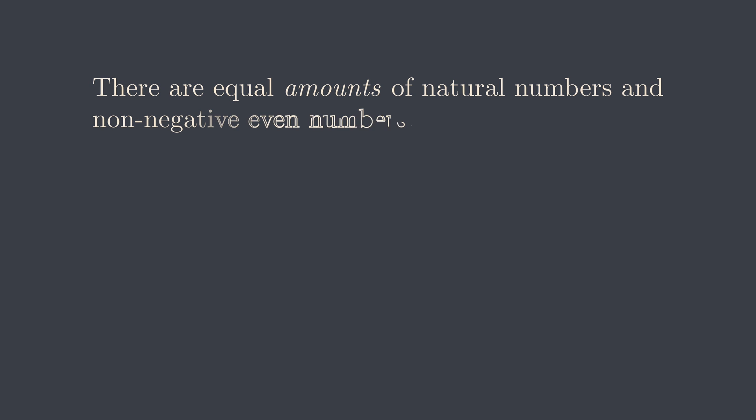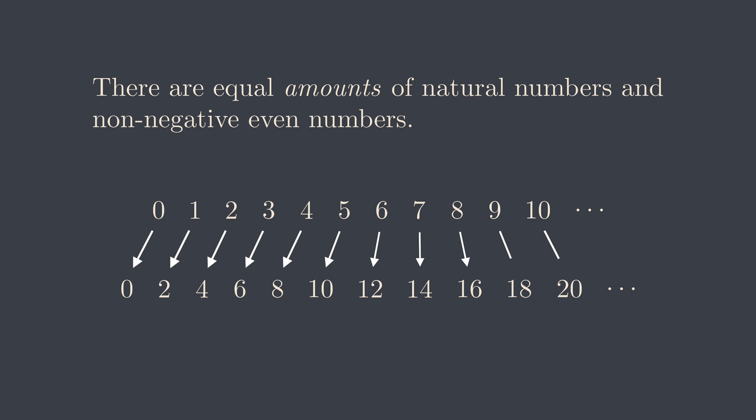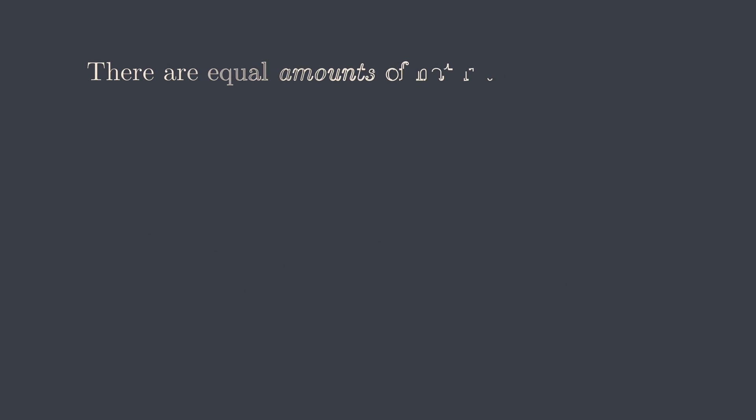For example, there are equal amounts of natural numbers and non-negative even numbers. For any natural number I pick, you can double it and get a non-negative even number. For any non-negative even number you pick, I can halve it and obtain a natural number. In this bijection, no number is left and no number is repeated. This is a shocking claim. The collection of non-negative even numbers is a proper subset of all the natural numbers. The size of a whole is the same as the size of a part of it.